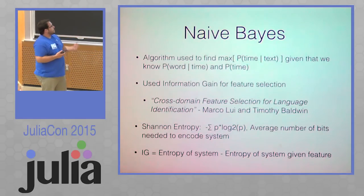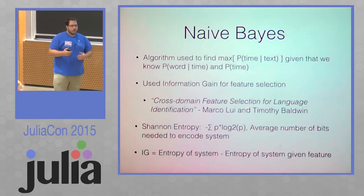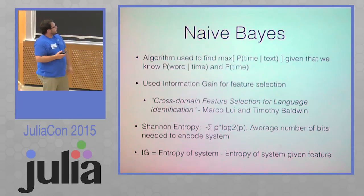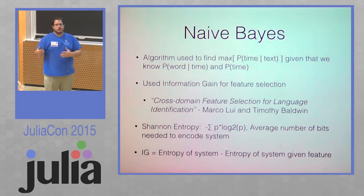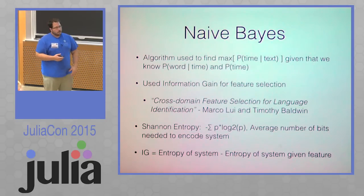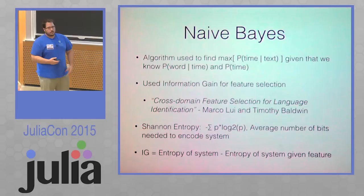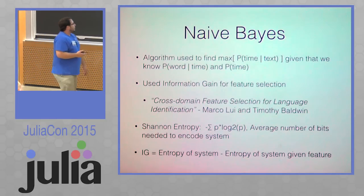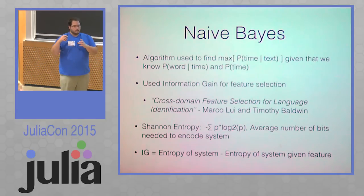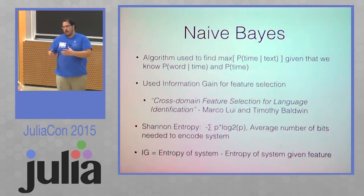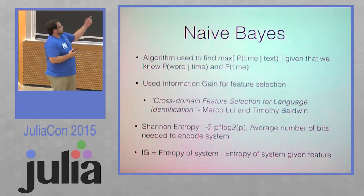Essentially, information gain is calculated by computing the Shannon entropy of a system, and then the Shannon entropy holding a word constant. Shannon entropy is the average number of bits it takes to encode a system. So if you have a very simple system, like heads and tails — two equally probable things — it takes one bit of information to encode that. Four things will take two bits, so on and so forth. So if we have a system that takes four bits to encode it and you hold something constant and it becomes completely deterministic, that gives you a lot of information. IG is the entropy of the system minus the entropy given a feature.